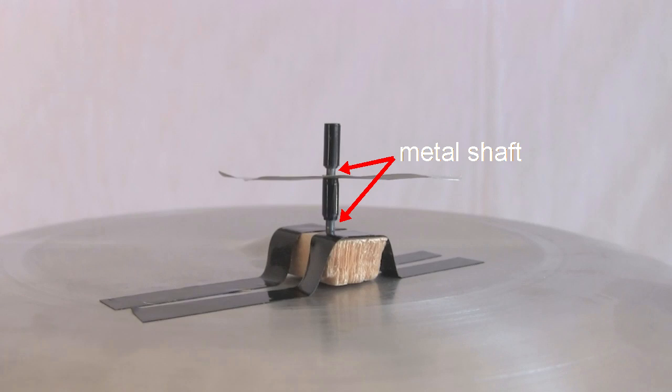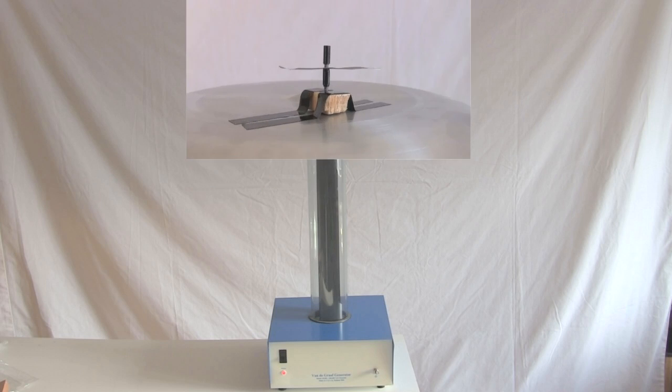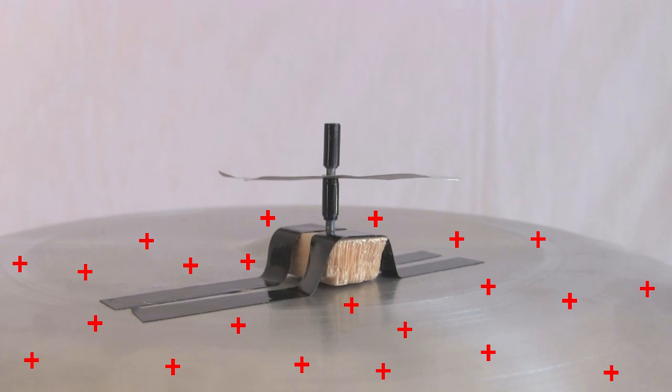The rotor is connected to a metal shaft, which is in turn connected to a high voltage source, like this Van de Graaff generator. The dome of this Van de Graaff generator is positively charged, and so the shaft and rotor are also positively charged.